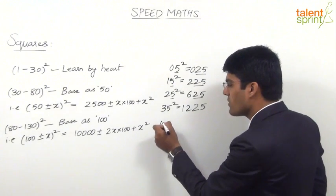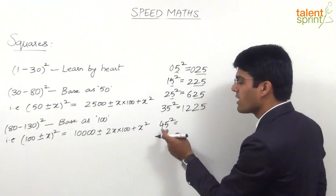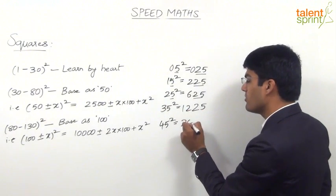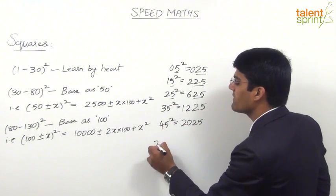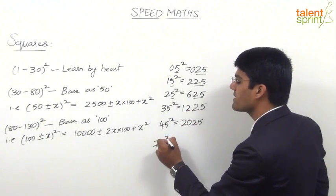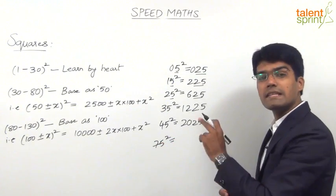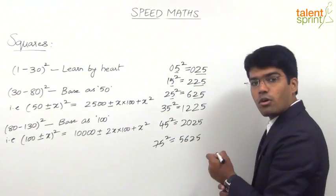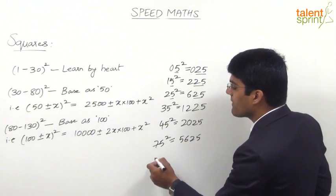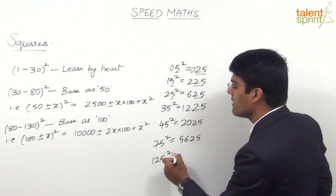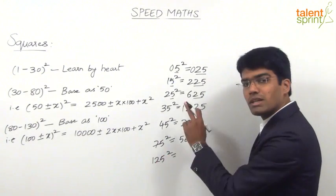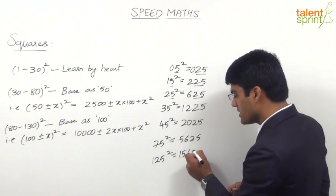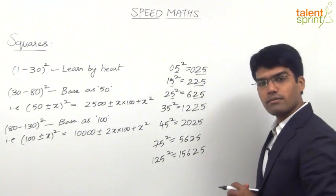Likewise, 45 squared: 4 into the next integer, 4 into 5 is 20, so the answer is 2,025. Or 75 squared: 7 into 8 is 56, so the answer is 5,625. Or 125 squared: 12 into 13 is 156, so the answer is 15,625.